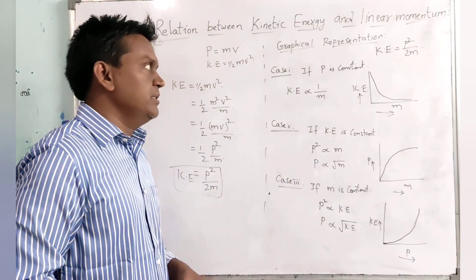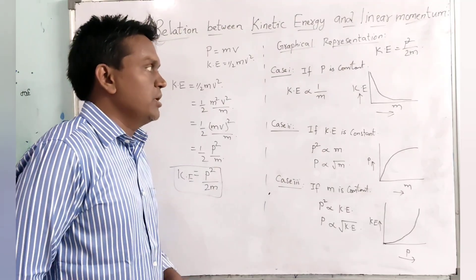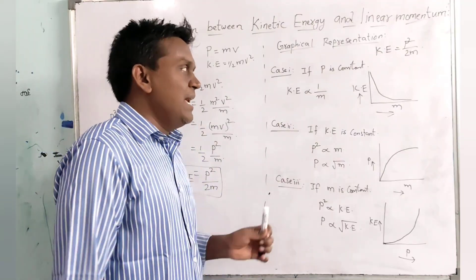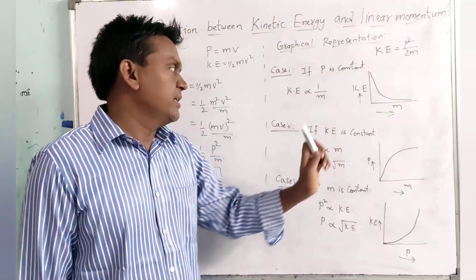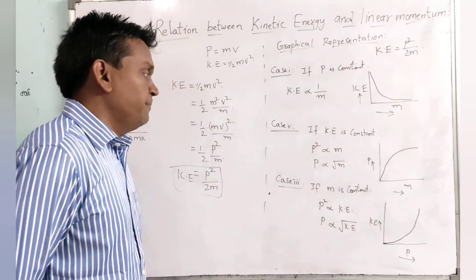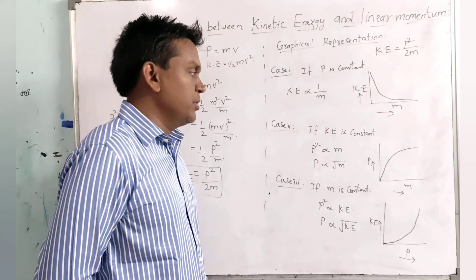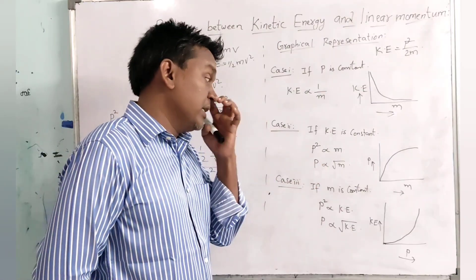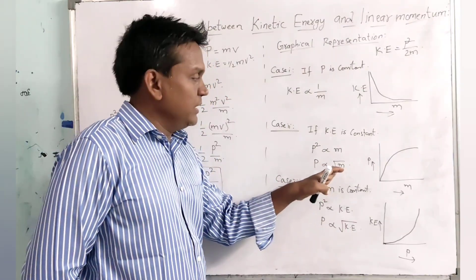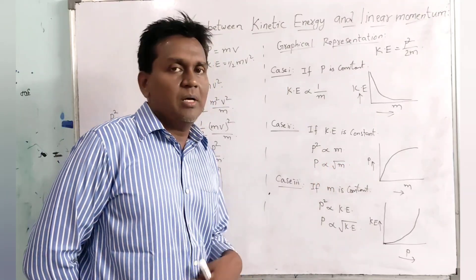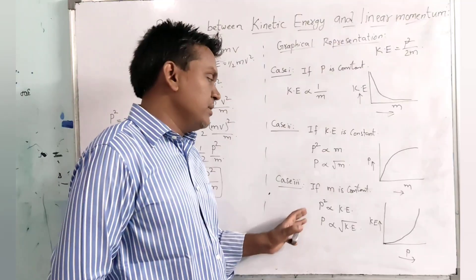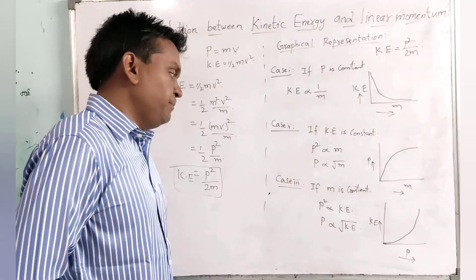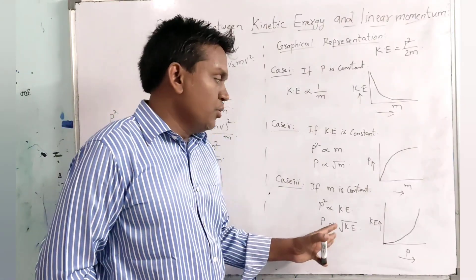So these are the three cases. In the first case, momentum is constant — kinetic energy and mass are inversely proportional to each other; as mass increases, kinetic energy decreases. In the second case, kinetic energy is constant — momentum is directly proportional to mass; as mass increases, momentum also increases. In the third case, mass is constant — momentum is directly proportional to the square root of kinetic energy.